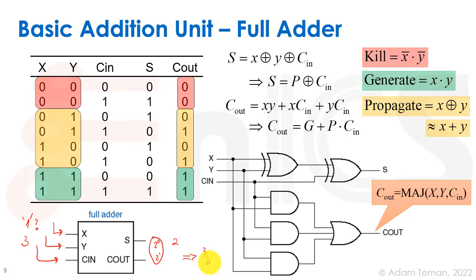There are other compressor circuits — for instance, many standard cell libraries include a 4-to-2 compressor. But the most commonly used compressor is the full adder, which is a 3-to-2 compressor.